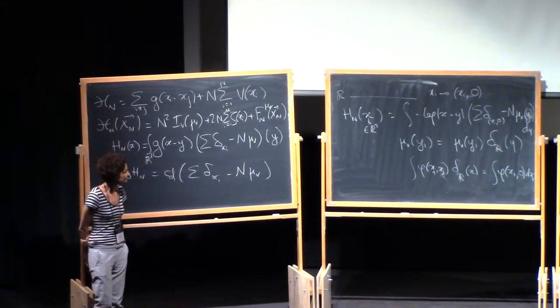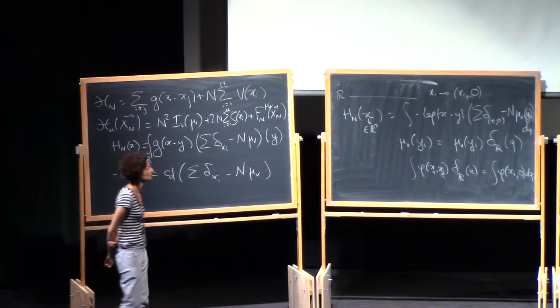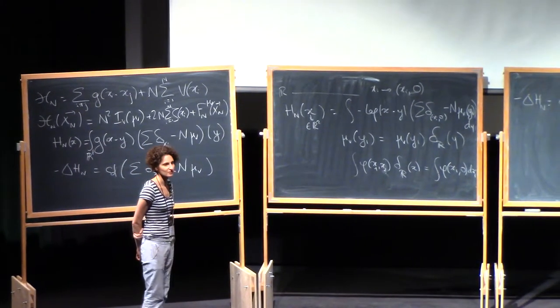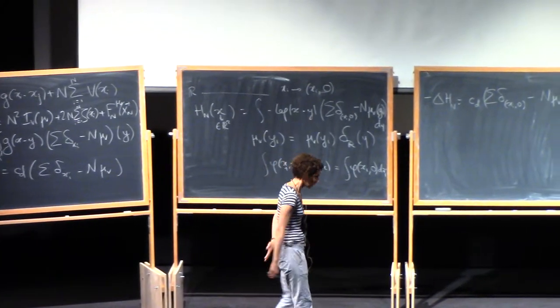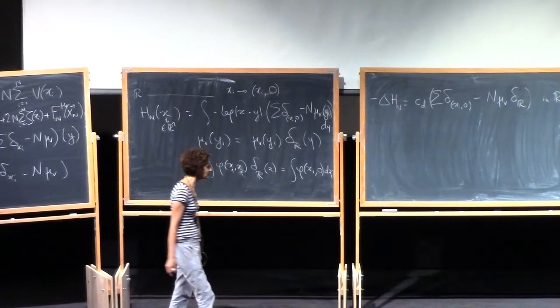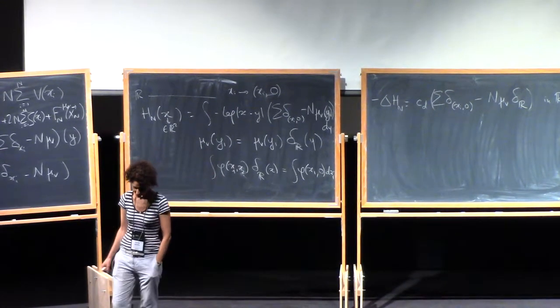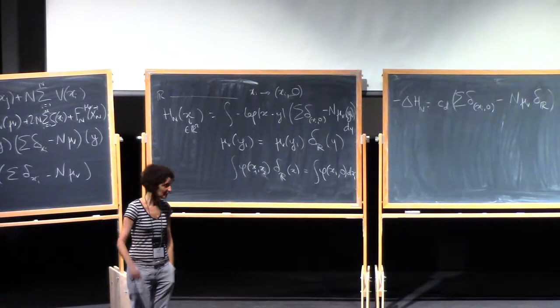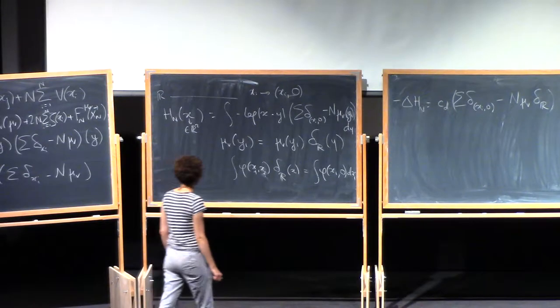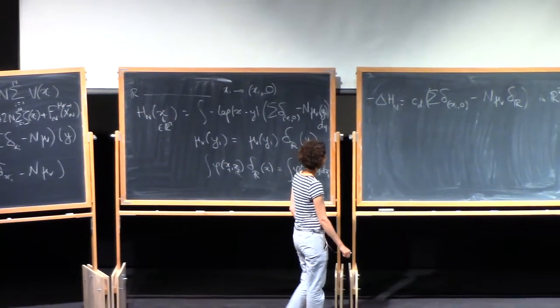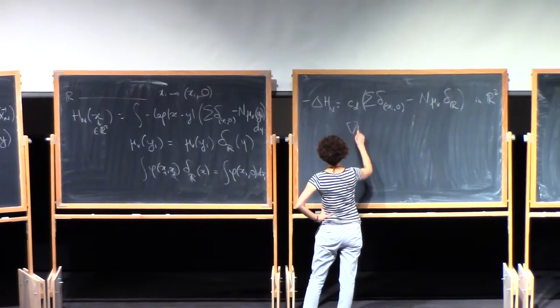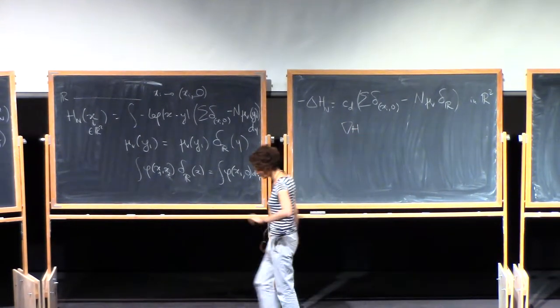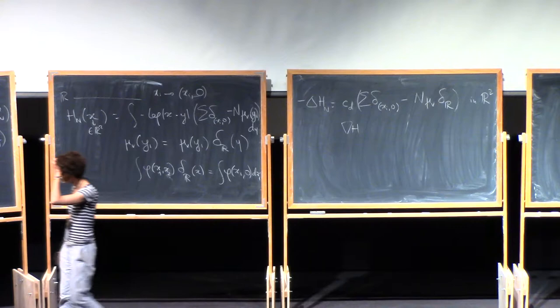For specialists, when you look at log gases or random matrices on the real line, you compute the Stieltjes transform. It's exactly the same procedure. So you view things in the upper complex plane. It's the same thing as expanding this and computing the gradient of H. So it's essentially the same as the Stieltjes transform.